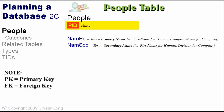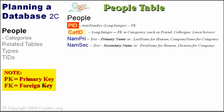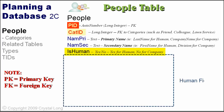The primary key of this table will be an auto-number field called PID. To make the records easier to filter, we will include a category. The categories will be defined in a separate table. In the people table, we will store a long integer CatID as a foreign key. Because we have humans and companies both stored in this table, we need a way to differentiate each record. So if an entity is human, we can prompt for additional human fields. IsHuman will be a yes/no field — yes if the record is a human, no if the record is an artificial entity.